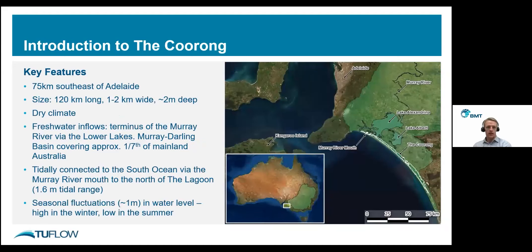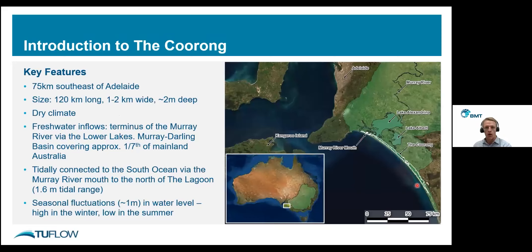The Coorong is an estuary system located in South Australia towards the bottom of Australia. It is a quite unique estuary feature — a long, skinny estuary about 120 kilometres long with widths ranging from about one to two kilometres typically, getting down to about 100 metres at one of the key hydrodynamic features at the Pank and Narrows.